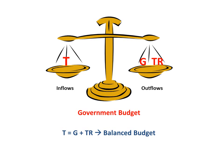But the budget is not always balanced. Sometimes we have taxes being greater than overall government spending and we would say that we have a budget surplus — that would be if taxes were greater than G plus TR.